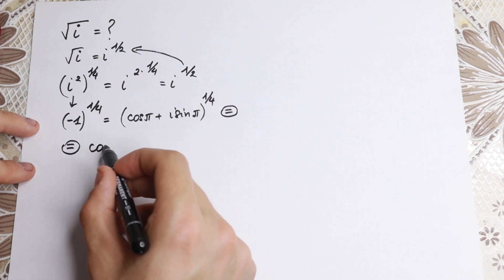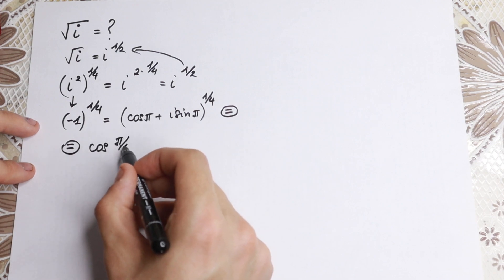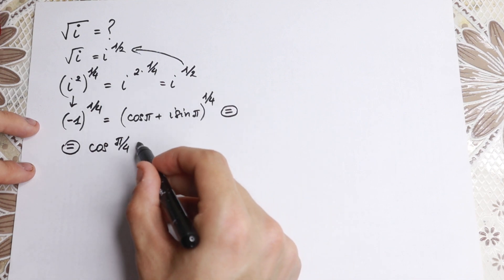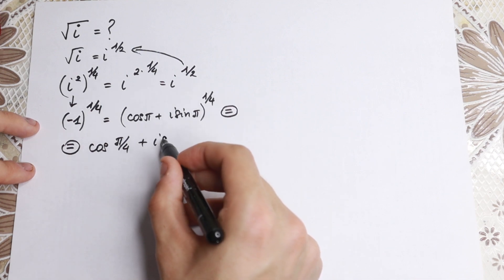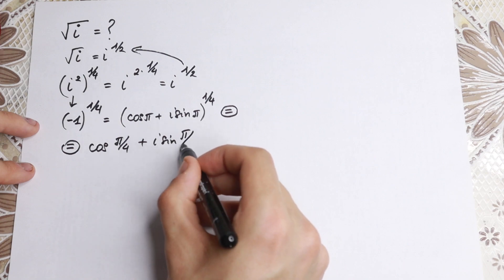We will have cosine π over four, because we need to multiply by this power, and we need to add i sine π over four as well.